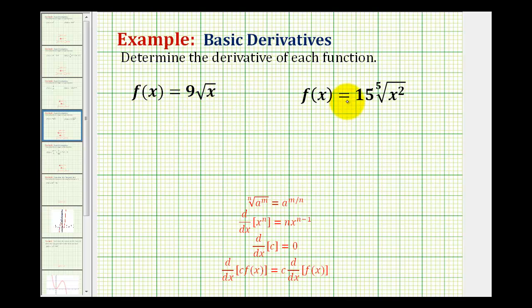We want to determine the derivative of the following functions using the power rule. The power rule states the derivative of x to the power of n is equal to n times x to the power of n minus 1.